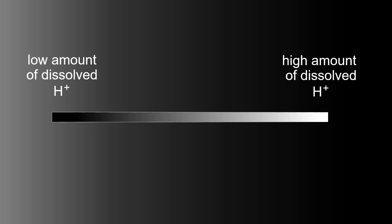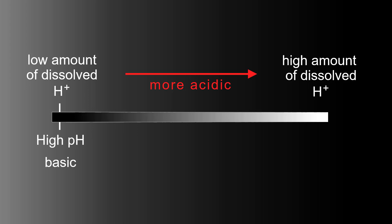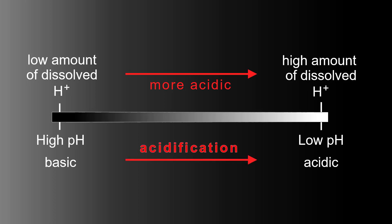First, let's take a look at what we mean by acid. We can look at this bar as a continuum — on the left showing low amounts of dissolved hydrogen ions, and on the right high amounts of dissolved hydrogen ions. Going from left to right, things become more acidic. A low amount of dissolved hydrogen ions is a high pH — that would be a basic solution. On the right, a high amount of dissolved hydrogen ions is a low pH — an acidic solution. pH is the inverse of the amount of hydrogen ions dissolved, which is why pH comes out high for basic and low for acidic. Going from left to right is considered acidification.